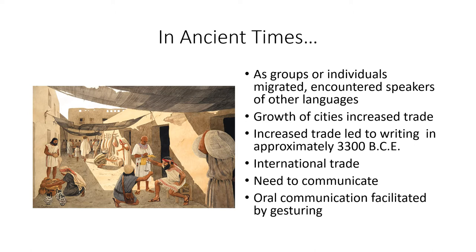Writing was invented approximately 3300 BCE, about 5300 years ago, and it happened at the same time in three different places: China, Egypt, and Mesopotamia. All three systems used the same kind of approach — it's called logographic or ideographic writing, and that is still the same kind of system used today in China.